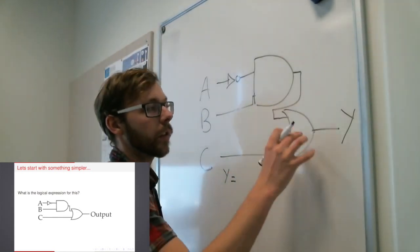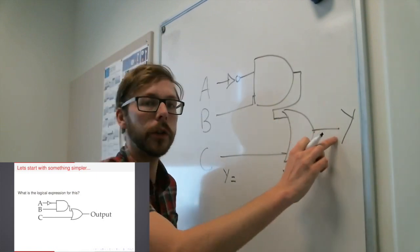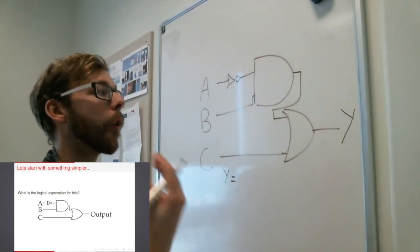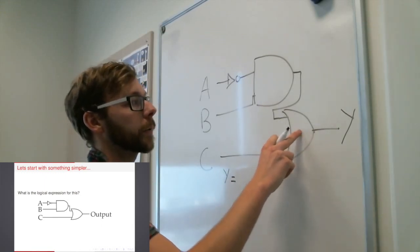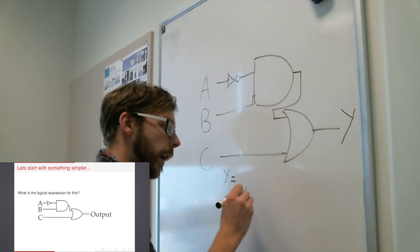So usually I'll start by writing my output expression Y equals, and then I work it backwards. Why? Well, it's because this, the final gate before you get to your output, that is the final operation that your logical expression will do.